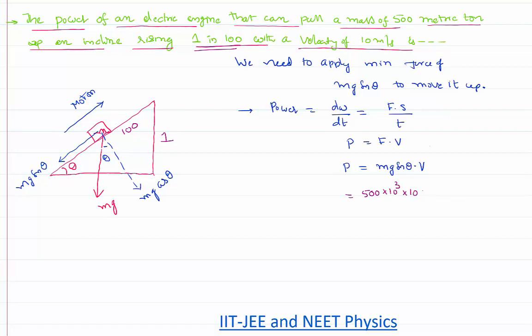is 500 times 1000. Assume g value is also 10 to make the calculation simple. Sine theta is 1 by 100, and velocity of that body is given in the problem as 10 meter per second.